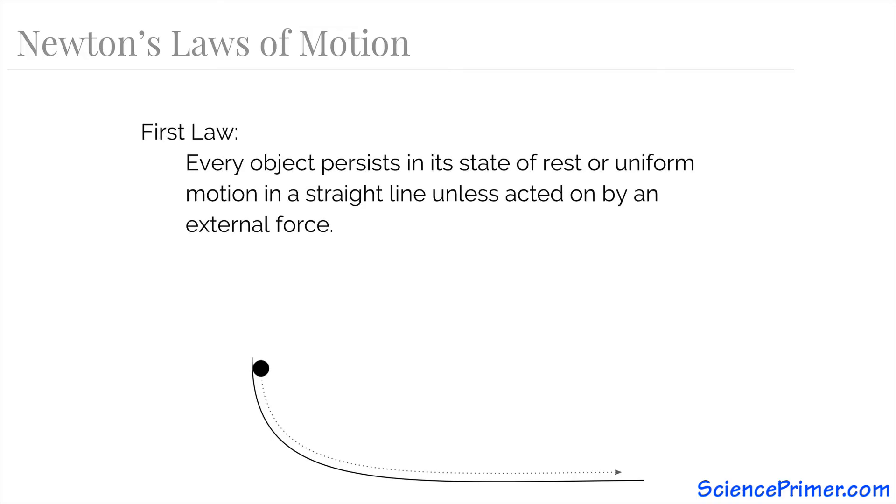The first law states that every object persists in a state of rest or in a state of uniform motion unless acted on by an external force. This is really just a formal expression of the concept of inertia as developed by Galileo.